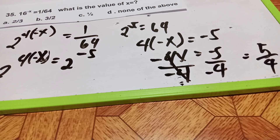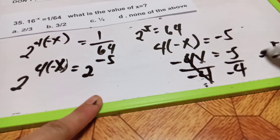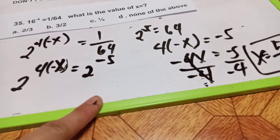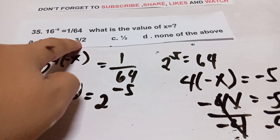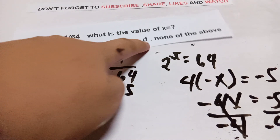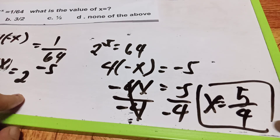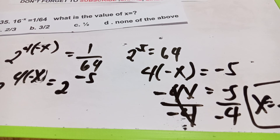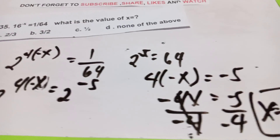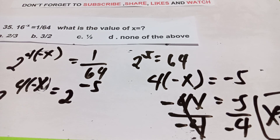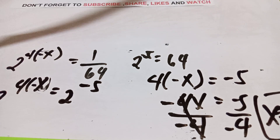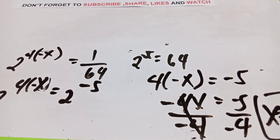The answer is x = 5/4. Checking the given choices — 1, 2, 3, or none of the above — since 5/4 is not among the standard choices listed, the answer is letter D: none of the above.